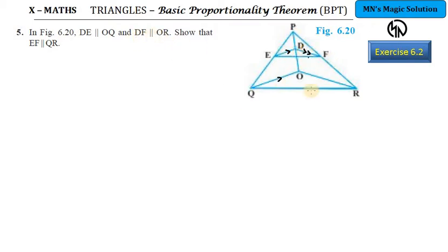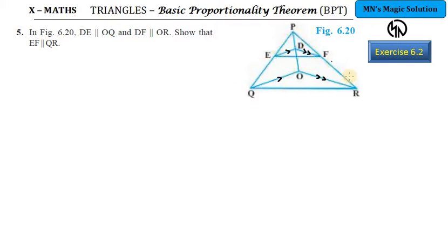This line DF is parallel to OR — so both conditions are given. Now you have to show that EF is parallel to QR. EF is this line, and you need to prove it is parallel to the base QR. To prove EF parallel to QR, you have to use the converse of BPT. By BPT, if two lines are parallel then the ratios are equal.